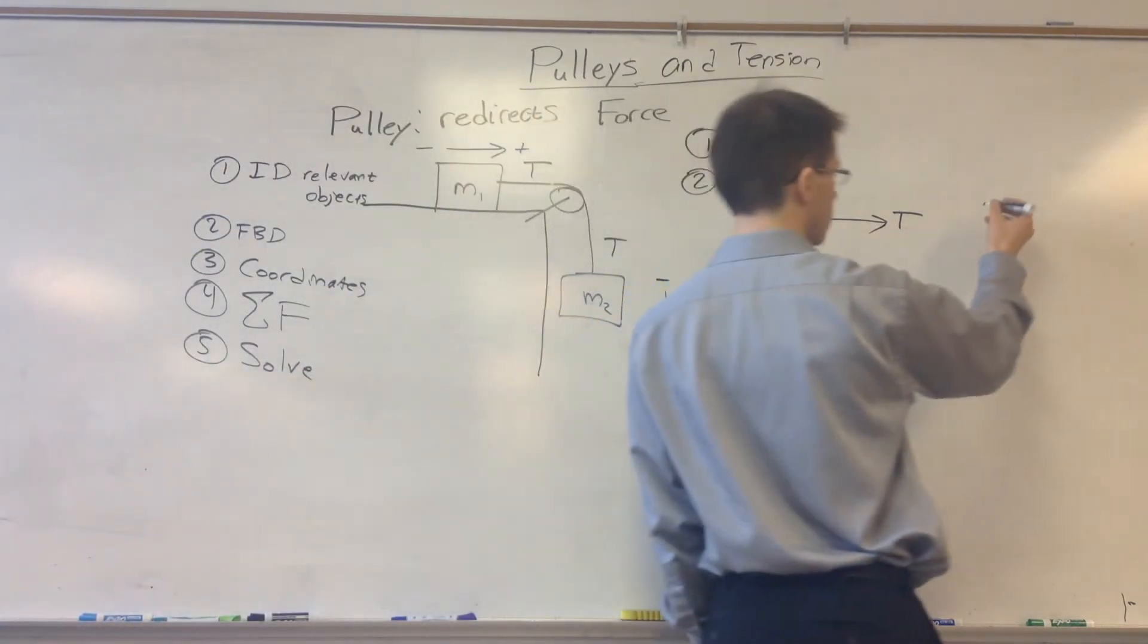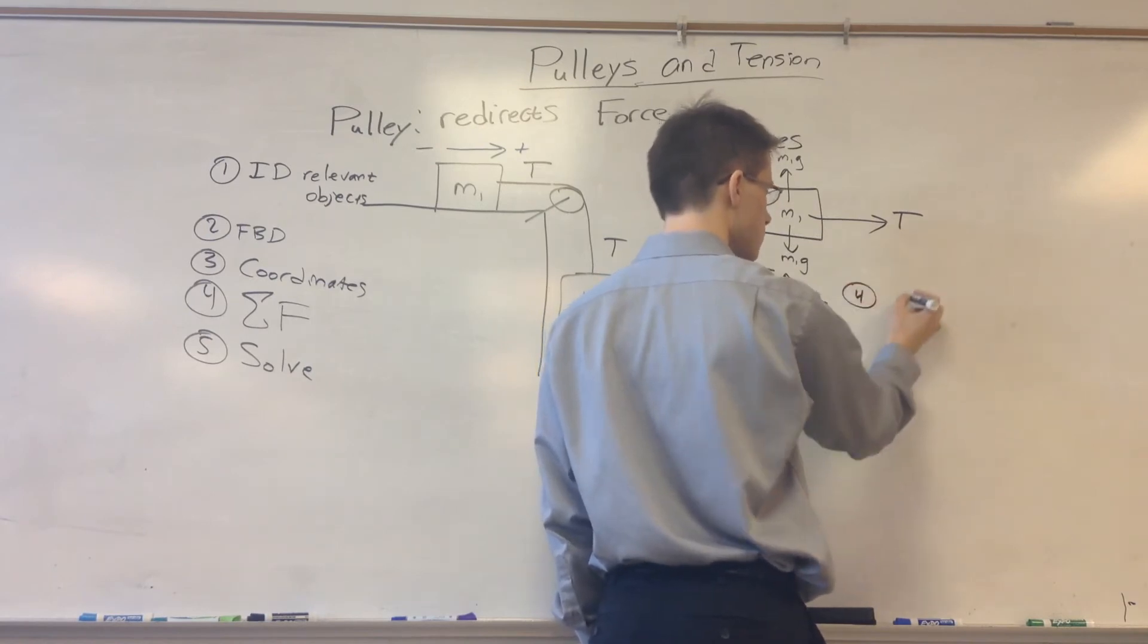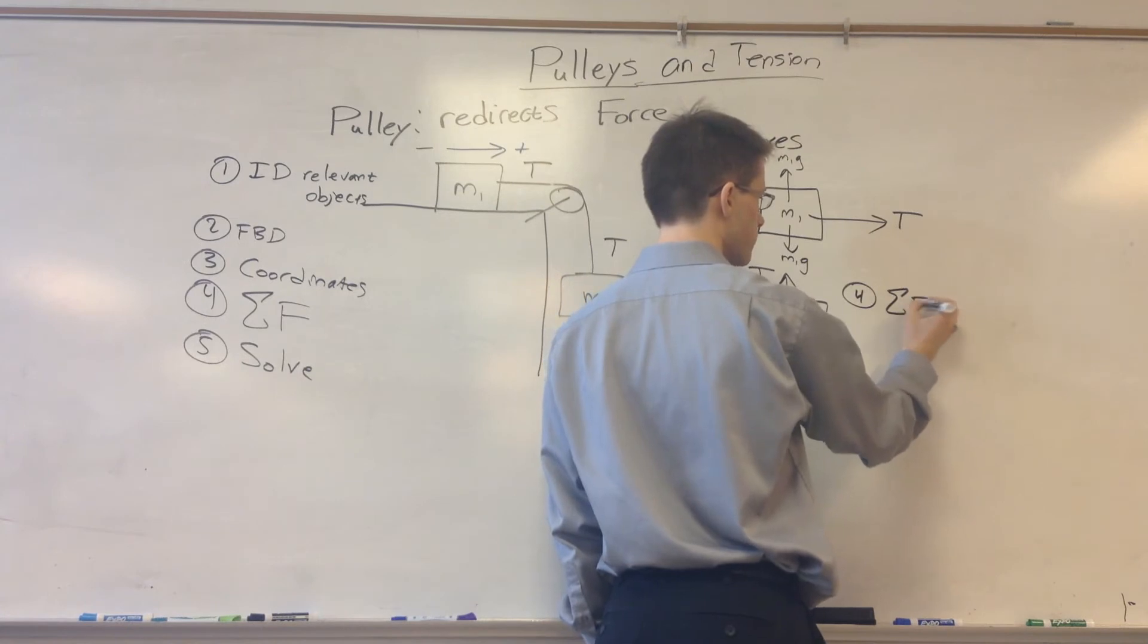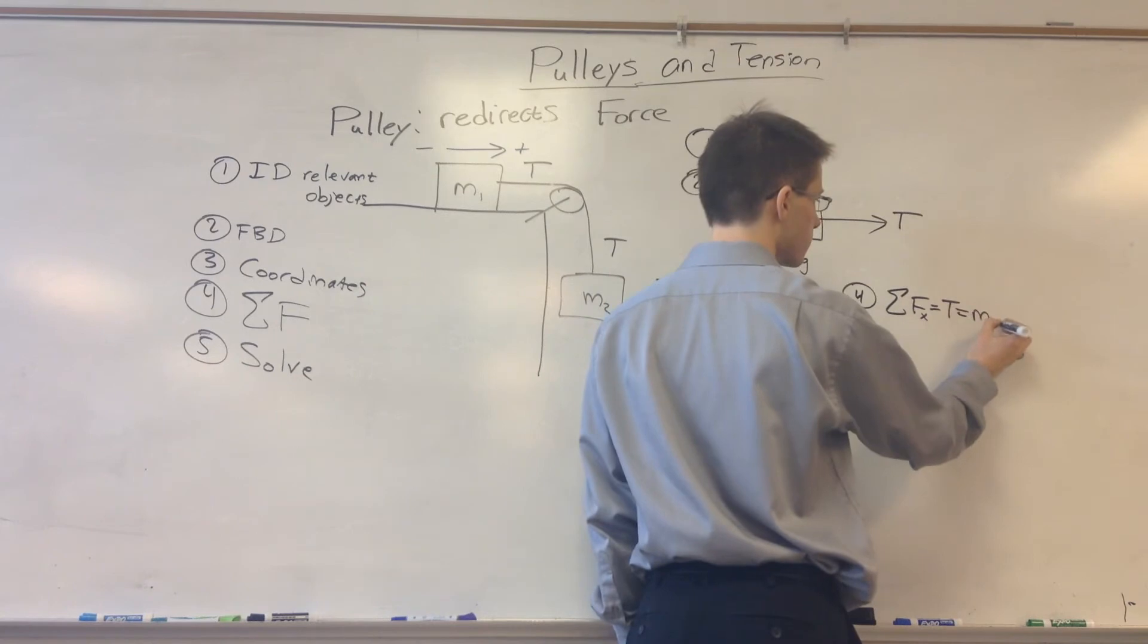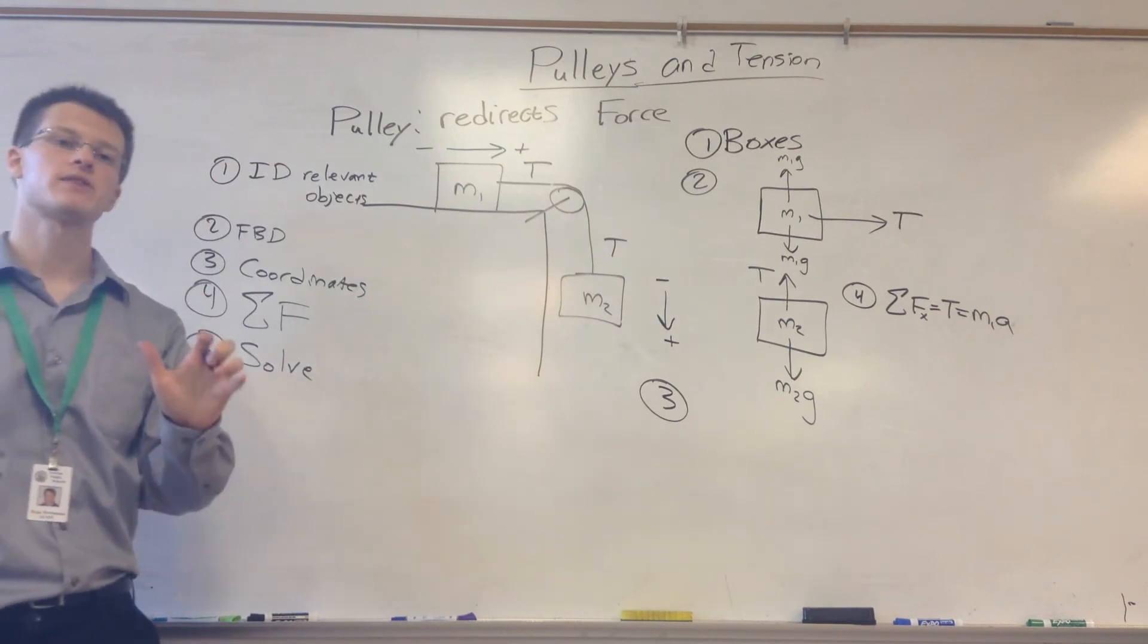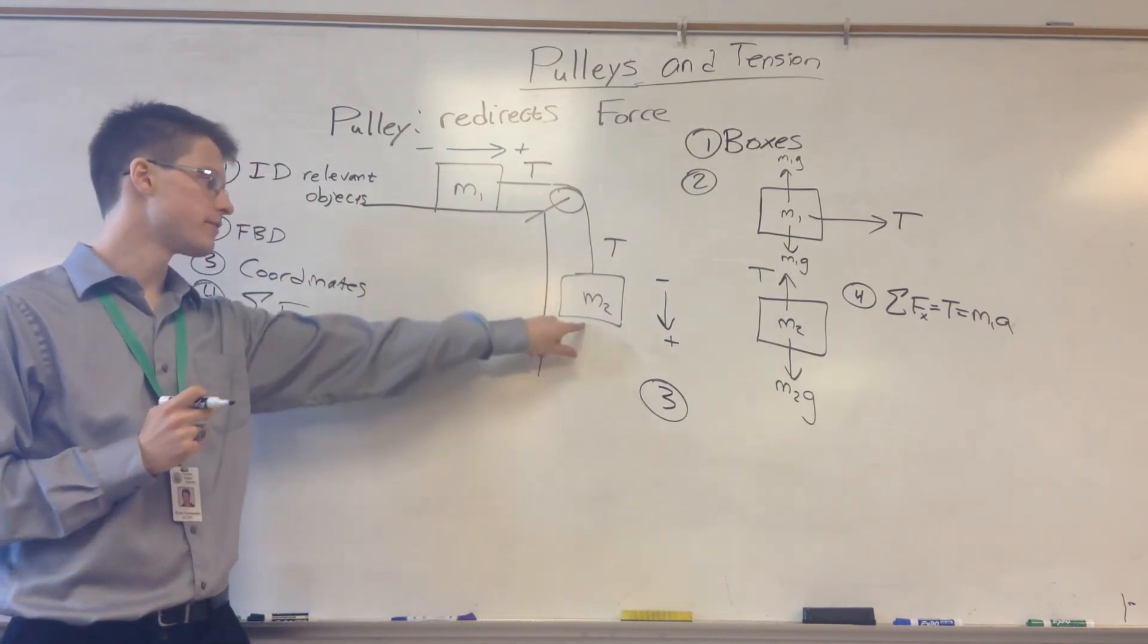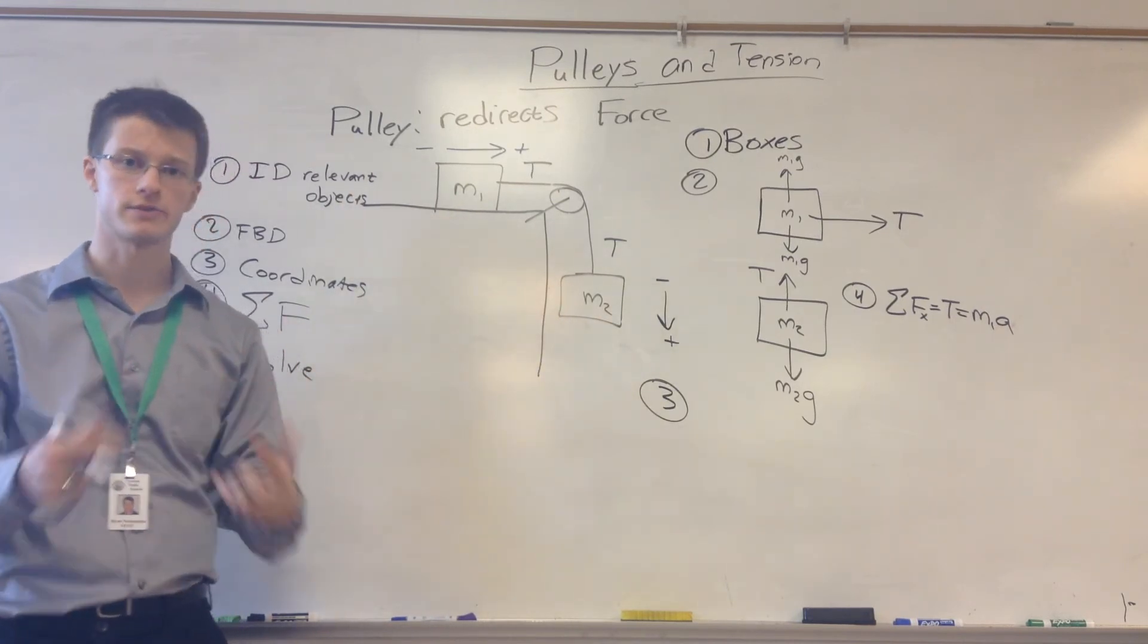Step four is to go ahead and write our force equations. For the first block here, we're going to add up the forces in the x direction, and that's only tension. Tension is going to be equal to mass m1 times acceleration a. These blocks connected by a rope still have the same acceleration, same magnitude of acceleration. The direction obviously is going to be different. This is accelerating down, this is accelerating to the right. The magnitude of acceleration is the same.